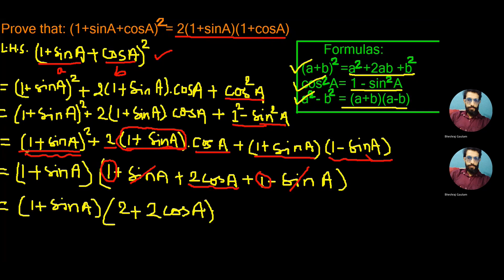Now in this second bracket, 2 is common, so let's take that 2 out as common. We continue it as 2 times one plus sine A in the first bracket. In the second bracket, since 2 is already out, from 2 times 1 only 1 remains, and from 2 cos A only cos A remains, giving us 2 times one plus sine A into one plus cos A.